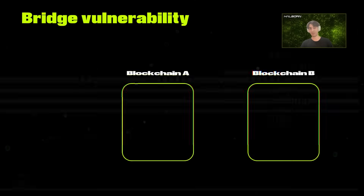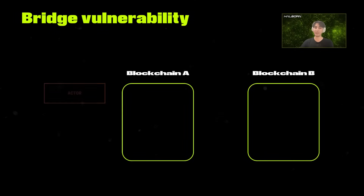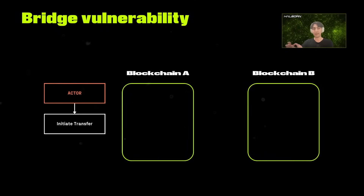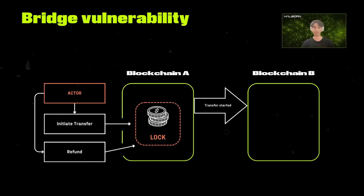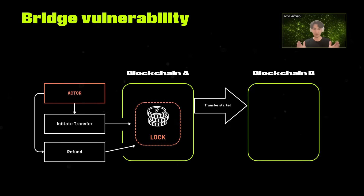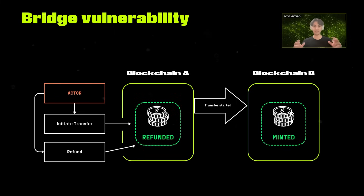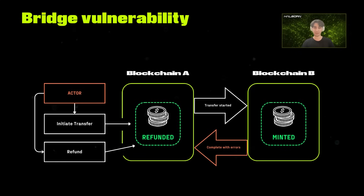For example, this special vulnerability where the user claims the token on the counterparty chain at the same time as getting the refund. Since there is an asynchronous way of working in the off-chain service — because it needs to pick up the event on one chain and relay it — it can take one minute difference. So during that one-minute window, anyone could claim the tokens on one chain and get a refund, which would essentially allow them to have both the minted token and the collateral.